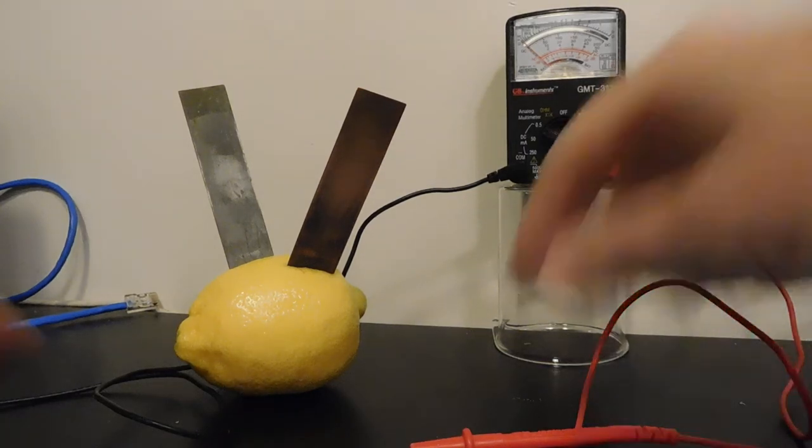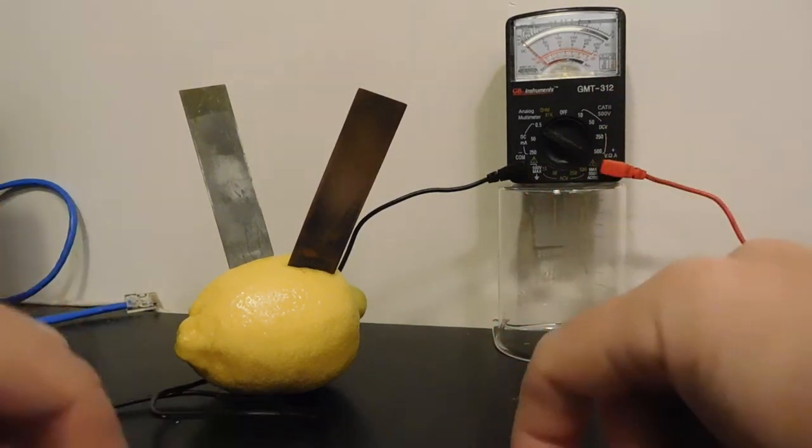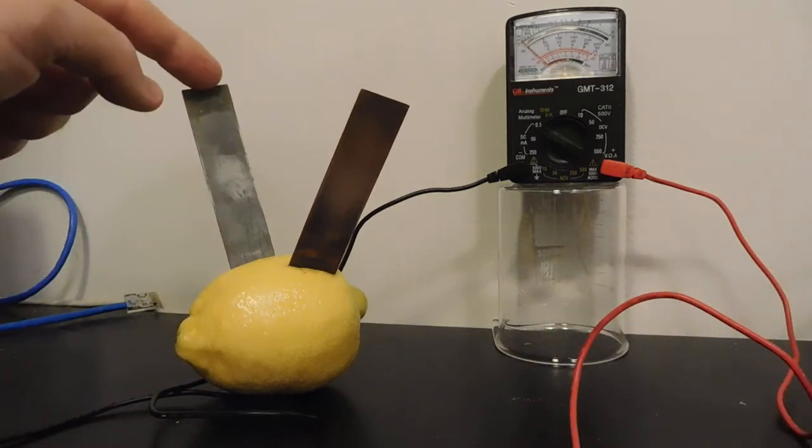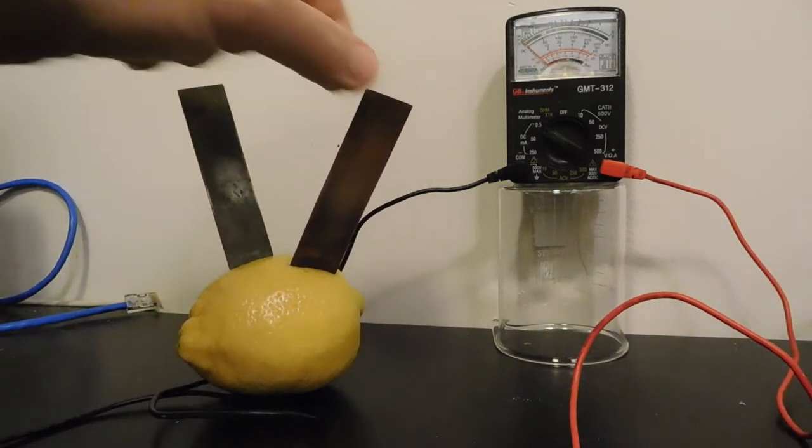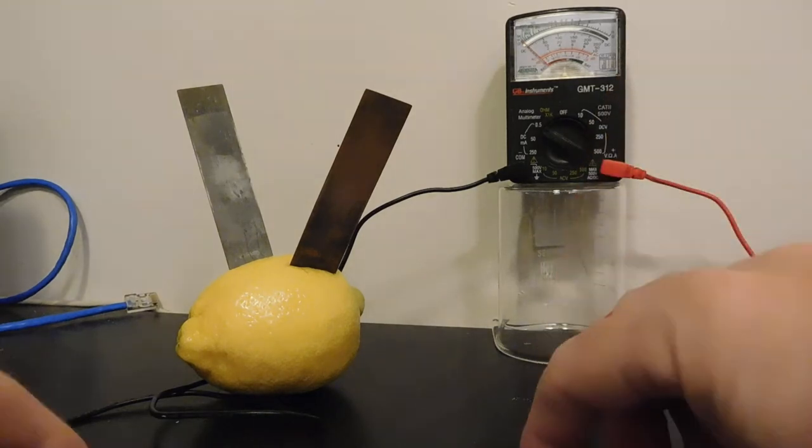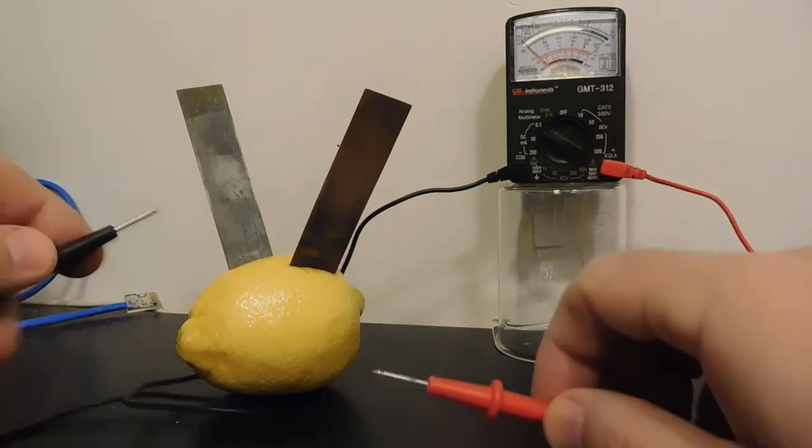I've got a multimeter with these two probes. I've got a lemon with a piece of zinc and a piece of copper stuck in it. A multimeter will detect electric current among other things.